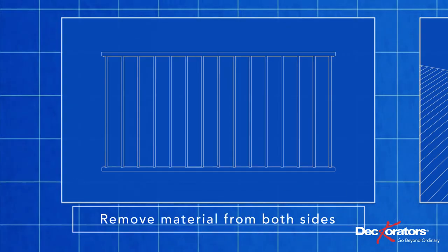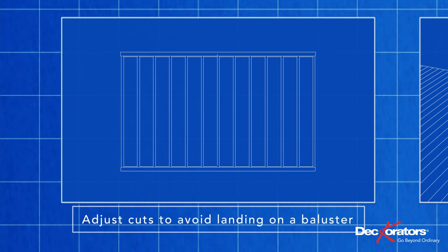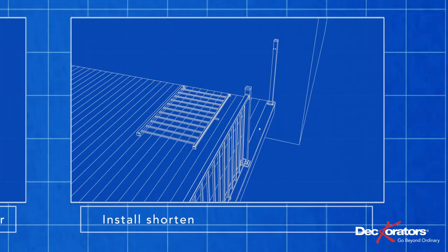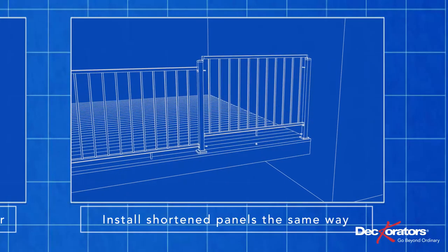So we'll go ahead and remove that amount from each side and, whoops, we landed on a baluster. So we'll move both cuts to the left or right 4 and 5 eighths inches. You can do this if you're going to end up on a baluster or too close to a baluster. After that, simply install the railing the same way as the others.